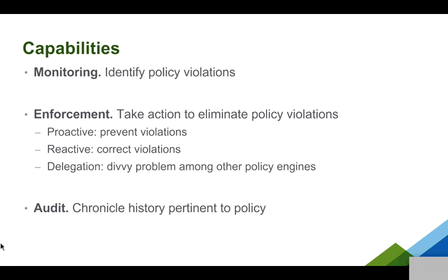Once you've given Congress those two inputs — the policy and a collection of cloud services — there are a number of things Congress tries to do to help the cloud operator make the actual state of the data center satisfy that policy. The first capability is monitoring. Congress takes the policy, compares it to what the services report as the actual state of the data center, and flags mismatches between desired and actual state. It's simple functionality, but it provides a great deal of visibility into what's happening in the data center, all in one place with a single interface. The second capability is enforcement, which is what most people want from a policy system: forcing the desired and actual state to be one and the same.